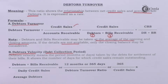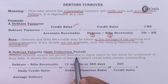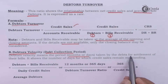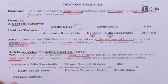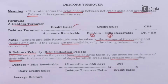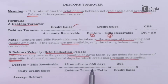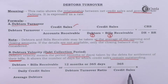Debtors velocity means the period in months or days taken by debtors for settlement of their bills. It shows the number of days for which credit sales remain outstanding. The formula is: debtors plus bills receivables divided by daily credit sales, or 12 divided by debtors turnover ratio to get debtors collection period in months. If 365 days is taken as the numerator, we can get the collection period in days.